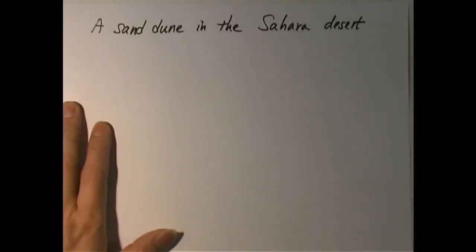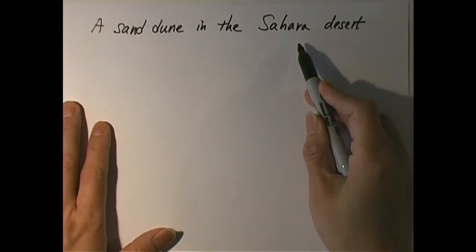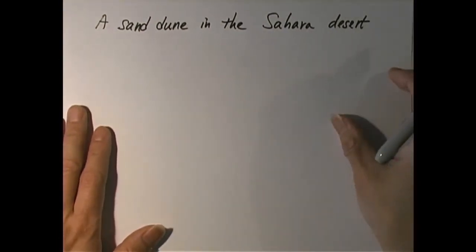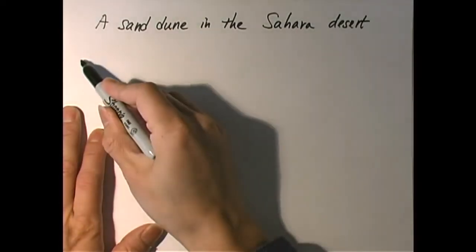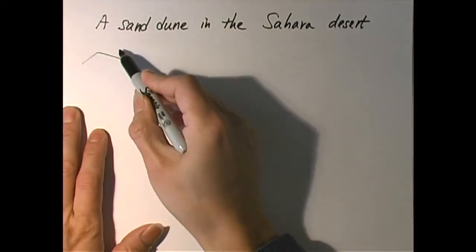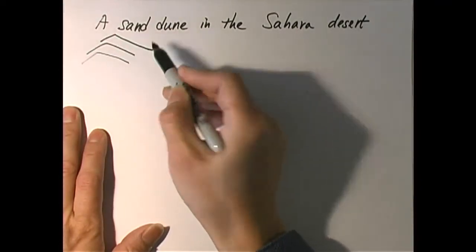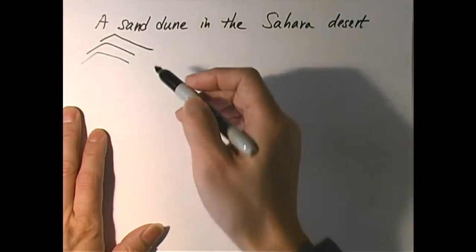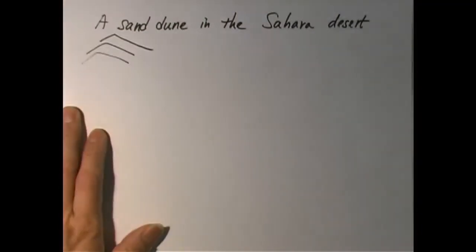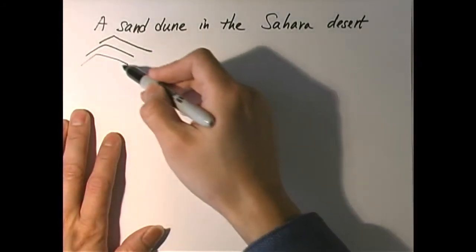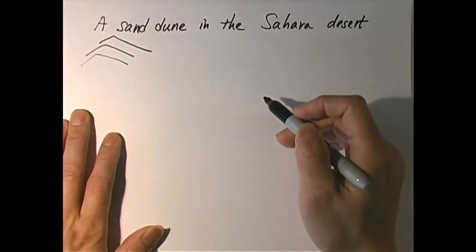As an example, we're going to look at a sand dune in the Sahara Desert. Even if you have never been to the Sahara Desert, I'm sure you have seen those pictures of the beautiful sand dunes. These are basically sand that's sculpted by the shifting wind and they form this dune-shaped structure.